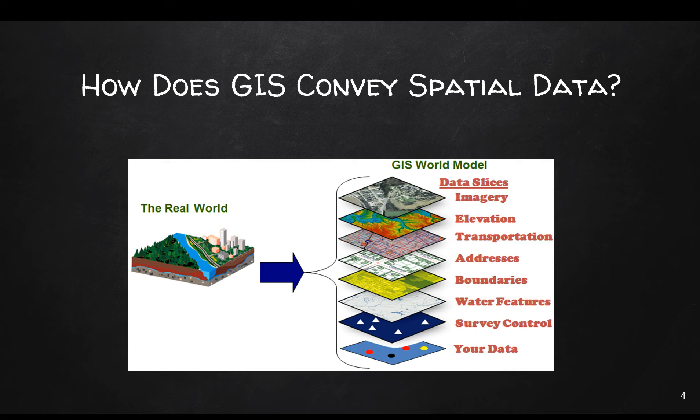GIS makes it possible to integrate data from multiple sources — for example, satellite data, which would be imagery, aerial photography, which would also be imagery, as well as other types of data such as addresses, which we can collect from people's homes, and use this data to analyze and model the real world.